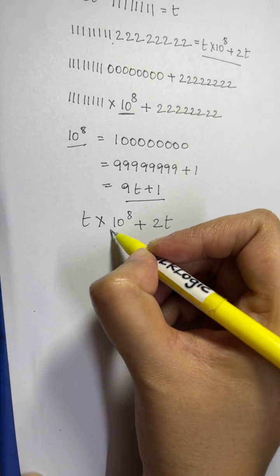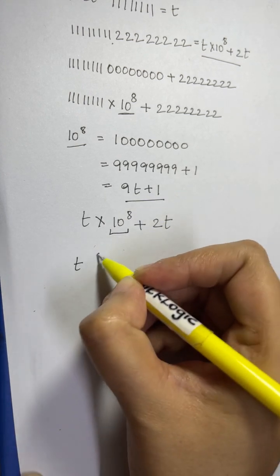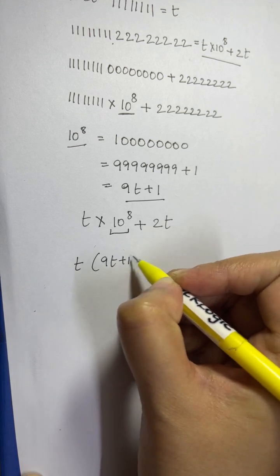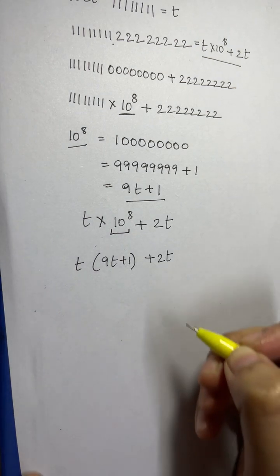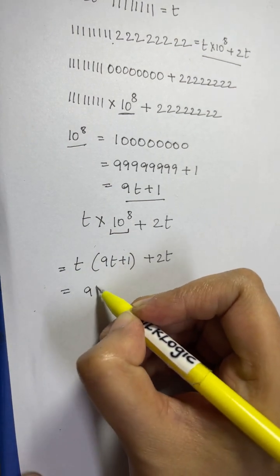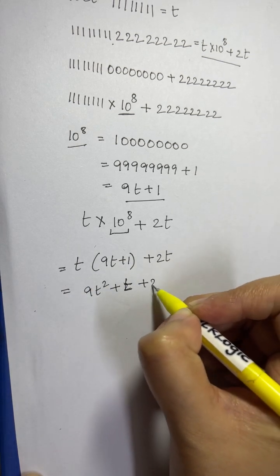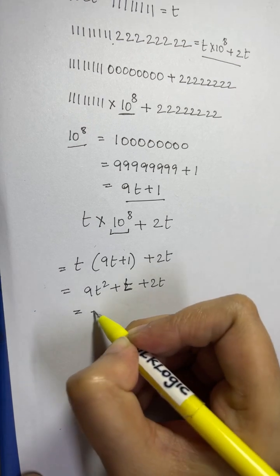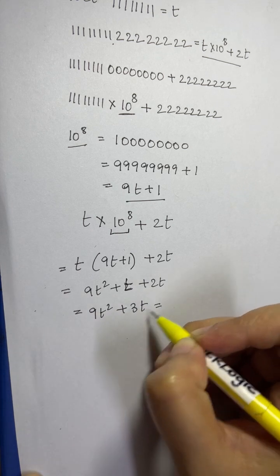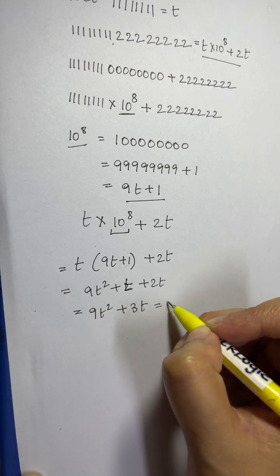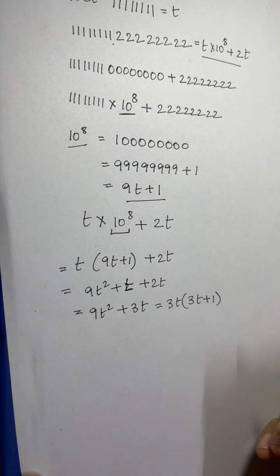Now substituting 10^8 as 9t + 1, we have t × (9t + 1) + 2t. Multiplying this out gives 9t² + t + 2t, which equals 9t² + 3t. This can be factored by taking 3t common: 3t(3t + 1).